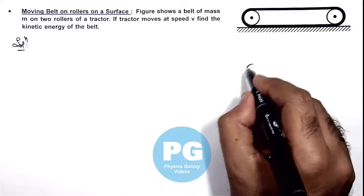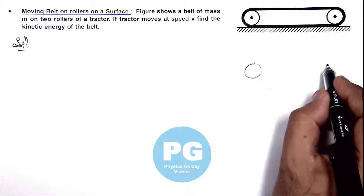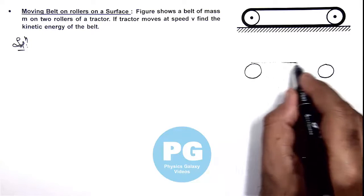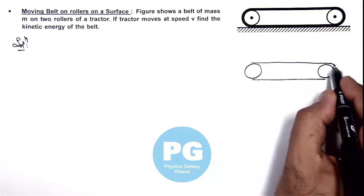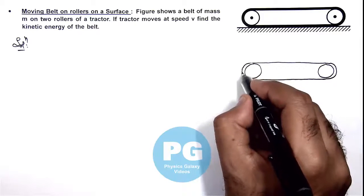So we redraw the figure. This is one roller, this is another roller, and we consider the belt is having two horizontal parts and two circular parts on the two sides.